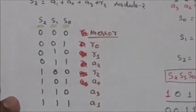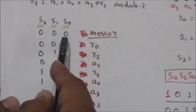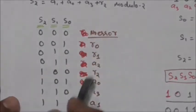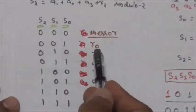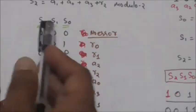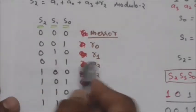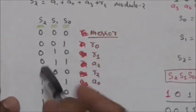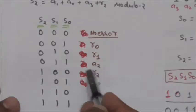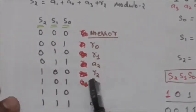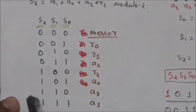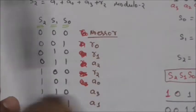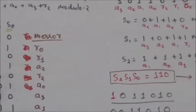After evaluating s2, s1, and s0, we can find out which bit contains the error. If s2,s1,s0 are 0,0,0 — no error. If 0,0,1 — error is in bit r0. If 0,1,0 — error is in bit r1. If 0,1,1 — error is in bit a2. If 1,0,0 — error is in bit r2. If 1,0,1 — error is in bit a0. If 1,1,0 — error is in bit a3. If 1,1,1 — error is in bit a1.